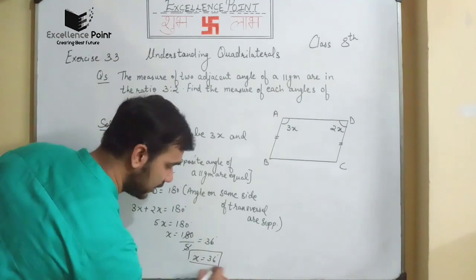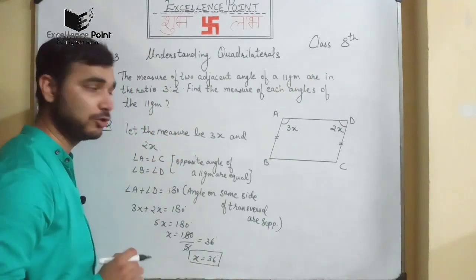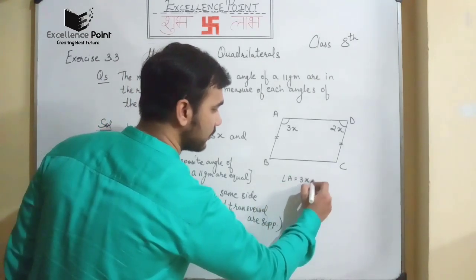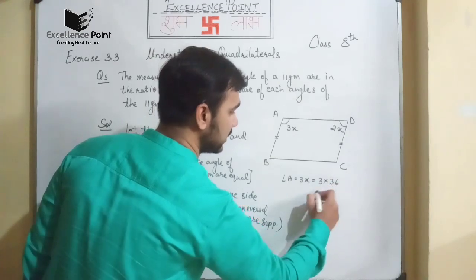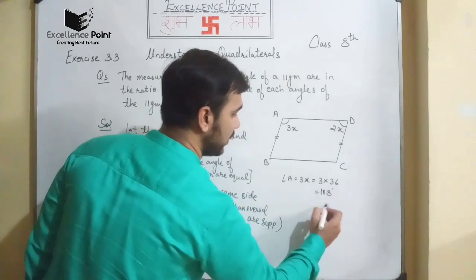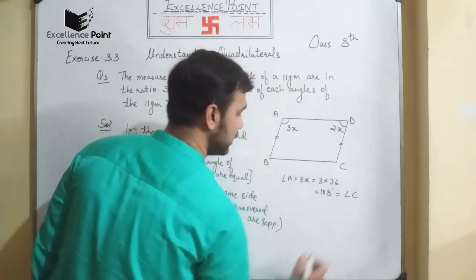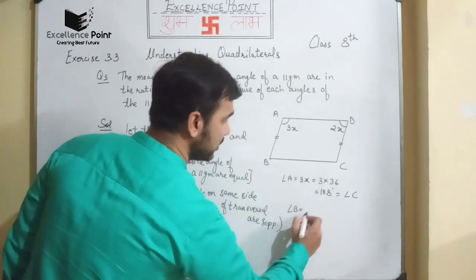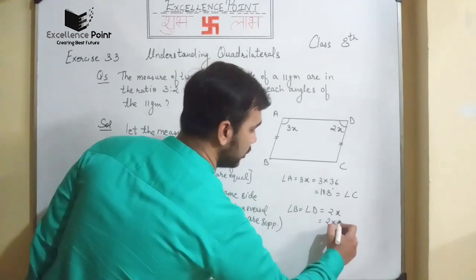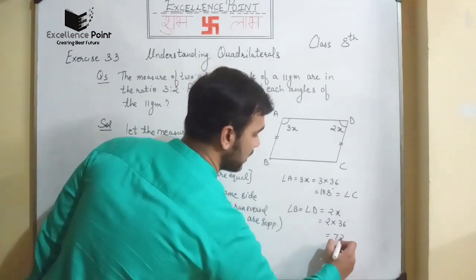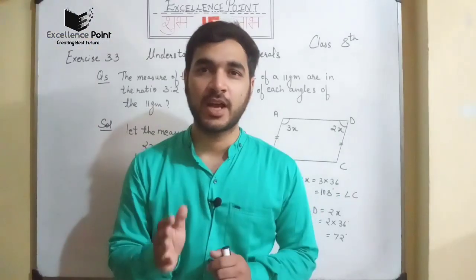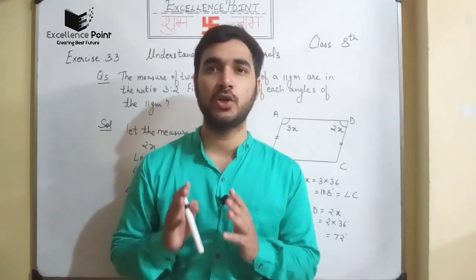The value of x is 36 degrees. Now angle A equals 3x, which is 3 into 36, equal to 108 degrees. Since angle A equals angle C, angle C is also 108 degrees. Angle B equals angle D equals 2x, which is 2 into 36, equal to 72 degrees. These are our final answers.